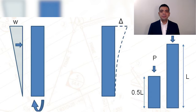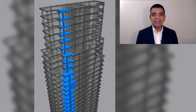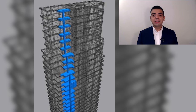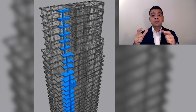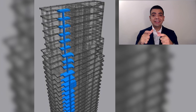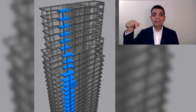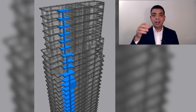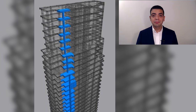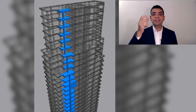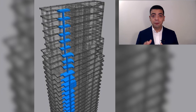To estimate the gravity load on a building, you divide the vertical elements like columns into tributary areas, estimate the weight on each tributary area, and multiply it by the number of floors. This gives you an estimate for the vertical loads in the vertical elements.